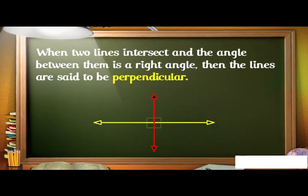When two lines intersect and the angle between them is a right angle, then the lines are said to be perpendicular. If a line AB is perpendicular to CD, we write AB is perpendicular to CD.